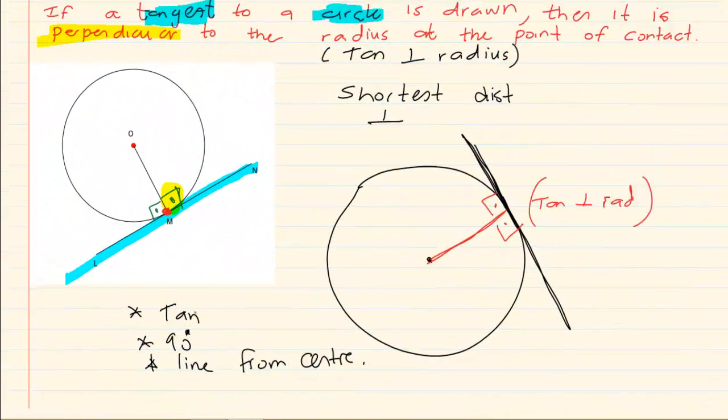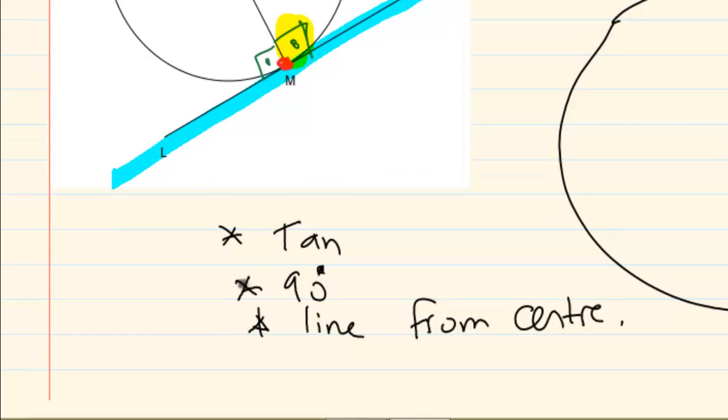Now what that means is if you got a tangent, you got a 90 degrees and it's from the center. Again it works a lot like the midpoint chord. It's basically 3 out of, 2 out of 3 system.